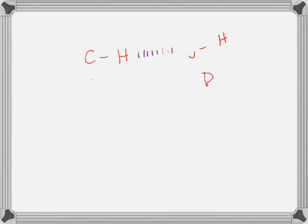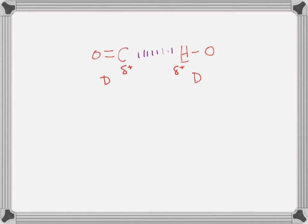Let's try it again with carbon and oxygen. Hydrogen bonding or not? That's a dipole, and that's a dipole, and I have a hydrogen bound to oxygen. But look at your dipoles — your carbon is positive, your hydrogen is positive. Again, it's a mismatch of those partial charges.